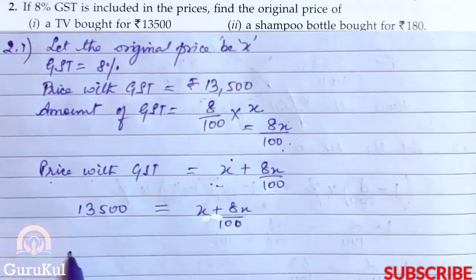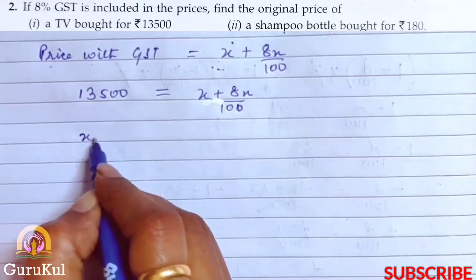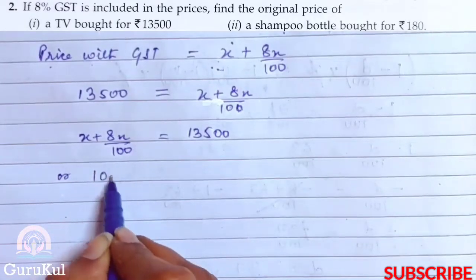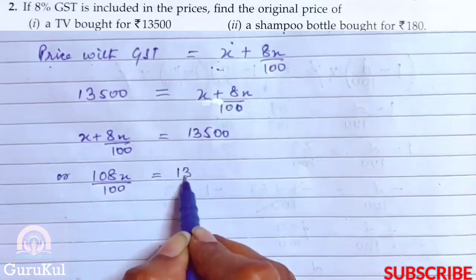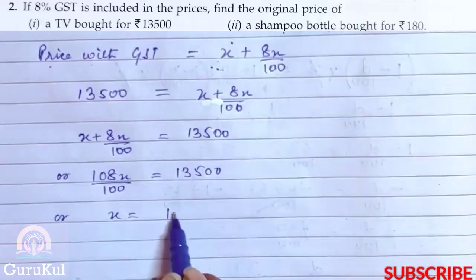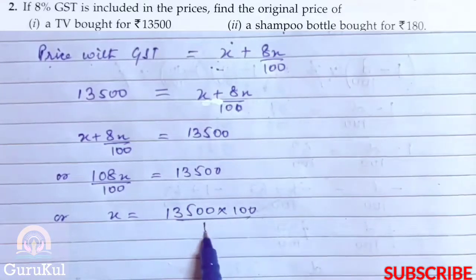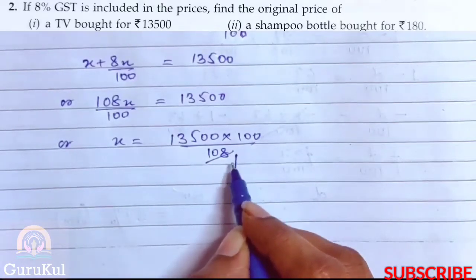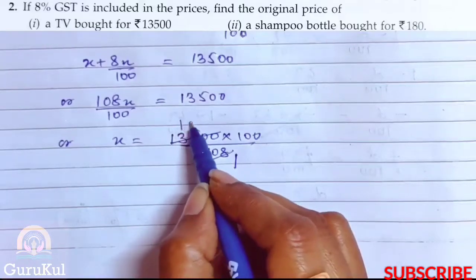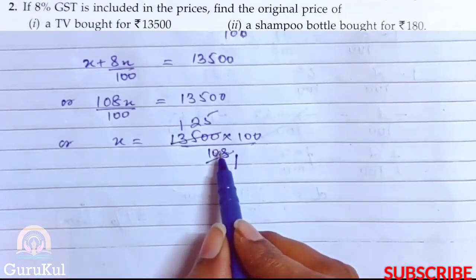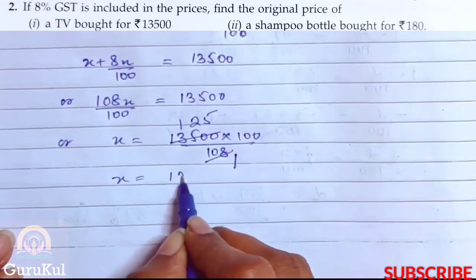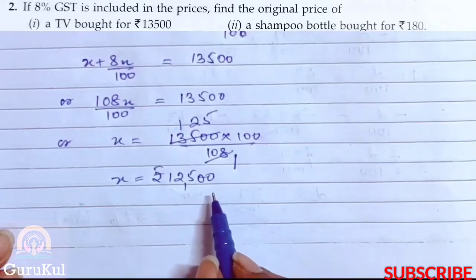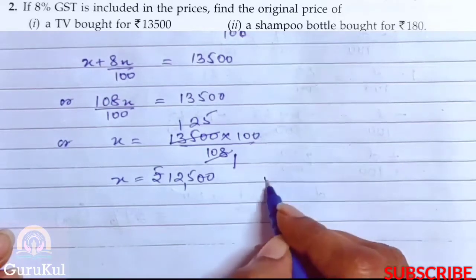Solving the equation: X + 8X/100 = 13,500, which gives 108X/100 = 13,500, so X = 13,500 × 100/108. Simplifying, X = ₹12,500. This is the actual price of the TV without GST.